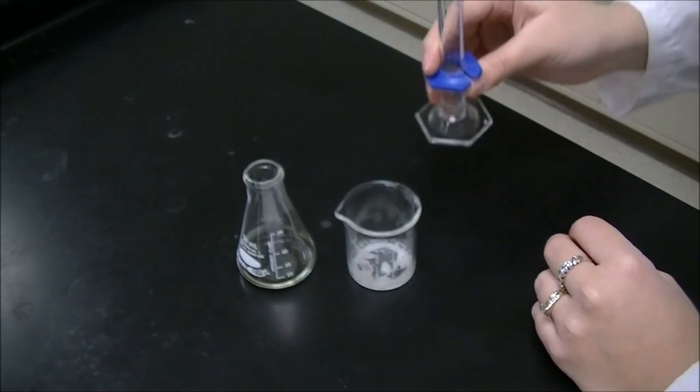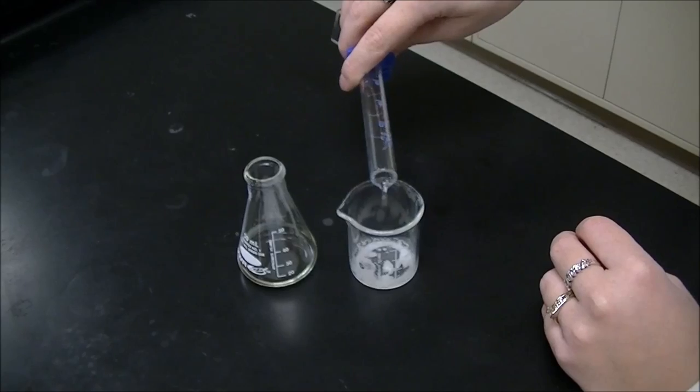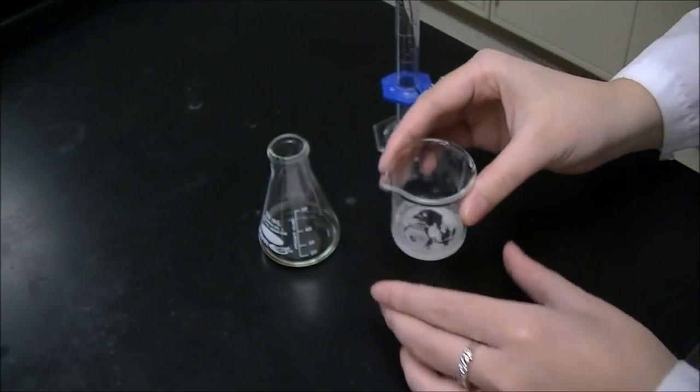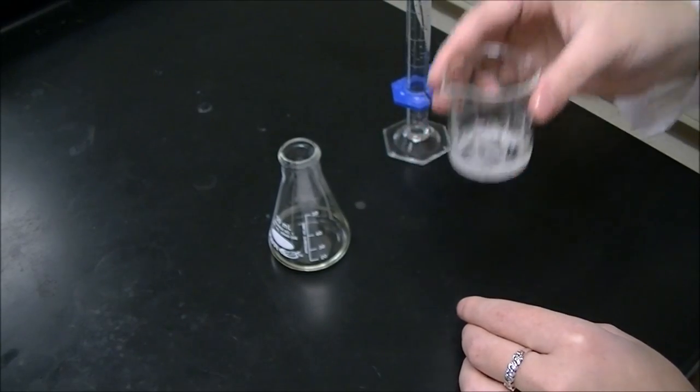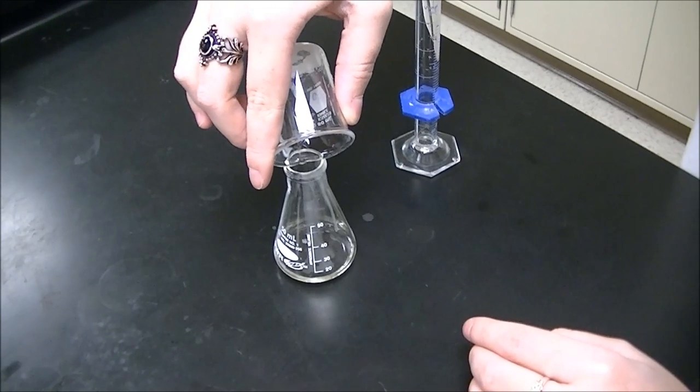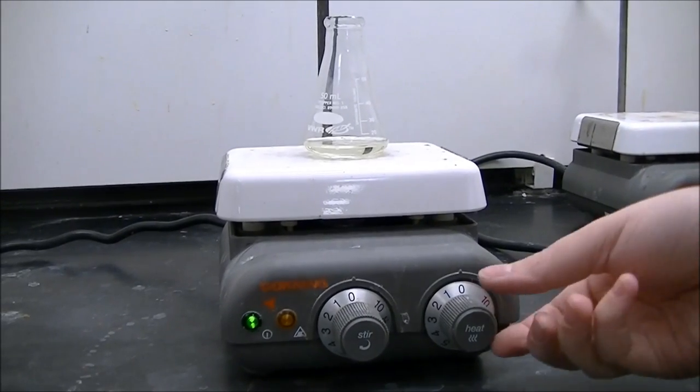Remove your organic layer into the tared Erlenmeyer flask. To make sure we've gotten all of our product, we'll wash the sodium sulfate with two milliliters of methylene chloride and add it to the flask.